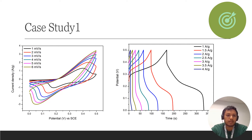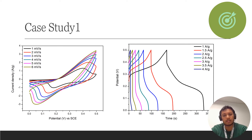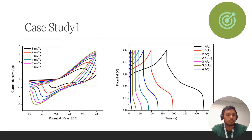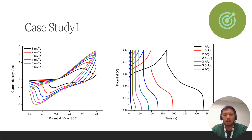Here is Case Study 1, showing cyclic voltammetry (CV) and galvanostatic charge-discharge (GCD). What I want to highlight: if your CV potential window is from 0 to 0.5 volts, your GCD should follow the same range, from 0 to 0.5 volts. You can also run analysis at different potential windows to determine your material's capability. This is the normal condition — the potential window must remain the same.